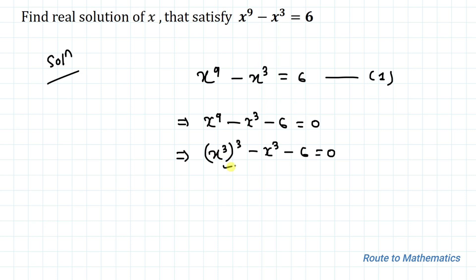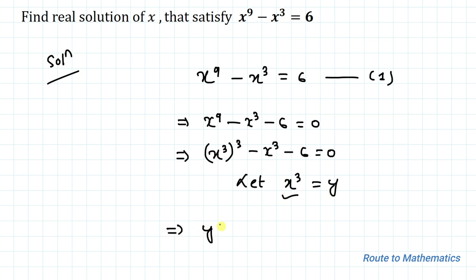If we open this parenthesis, the two powers get multiplied and we ultimately get x to the power 9. Now in the next step, let's take x cubed equals y. By substituting x cubed as y, we can write y cubed minus y minus 6 equals 0.